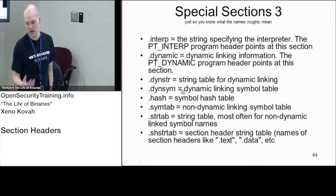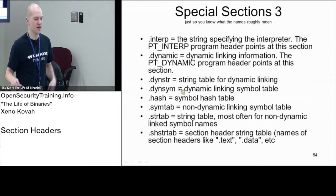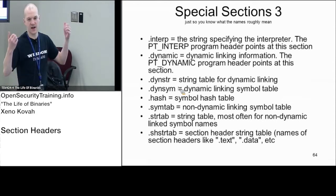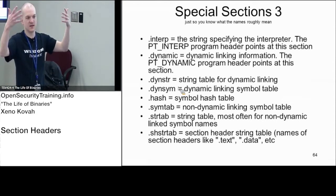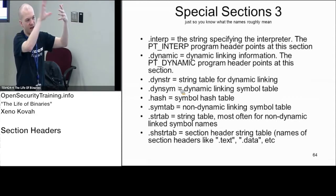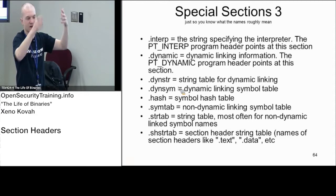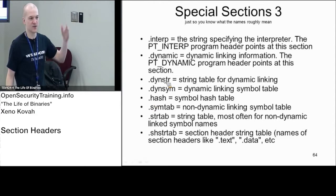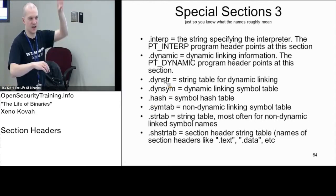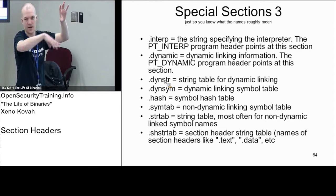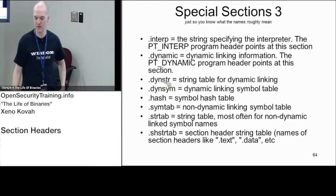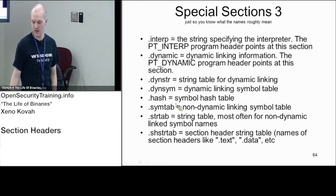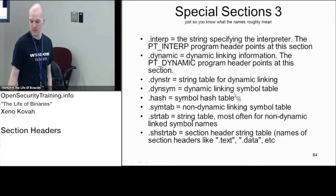.dynstr is the string table for dynamic linking. Going back to the PE analogy: we had the INT and IAT where the INT pointed at hint-name entries. You can think of .dynstr as the names table — not the import names table with RVAs, but the actual string names pointed to by those RVAs. .dynsym is the dynamic linking symbol table, containing symbols if they're built into the binary.